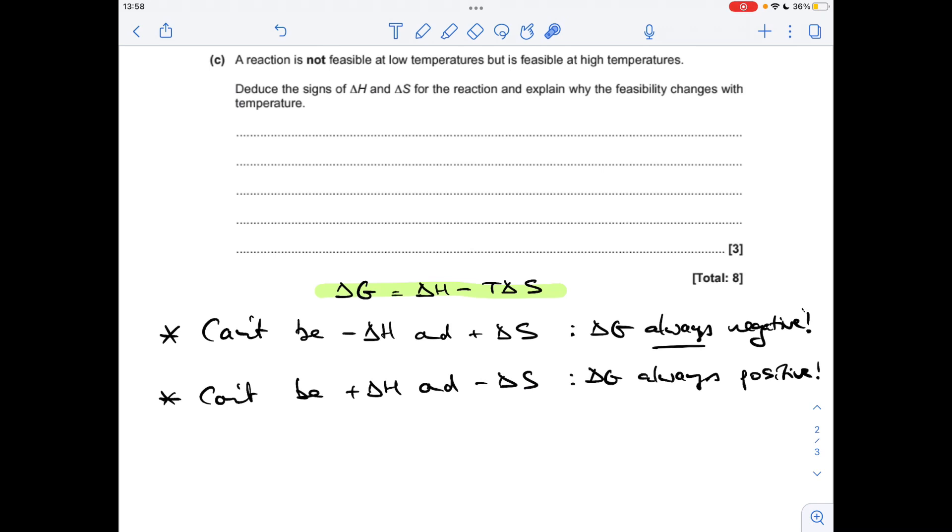If it was endothermic, so positive delta H, and the disorder decreased, so your entropy change is negative, you've got, that's positive. You've got a double negative, if this is negative, so you combine two positive terms now. Delta G is always positive, so this would never be feasible.